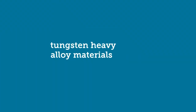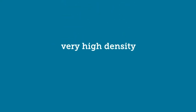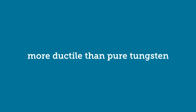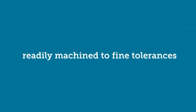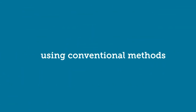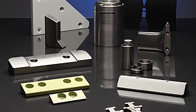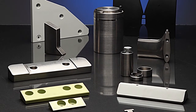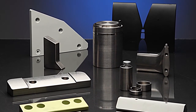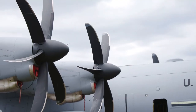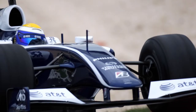WolfMet is a long established range of tungsten heavy alloy materials. The alloys have a very high density but are more ductile than pure tungsten and can be readily machined to fine tolerances using conventional methods. This allows the manufacture of a large range of compact components for many applications, such as ballast weights for military aircraft and top flight racing cars.